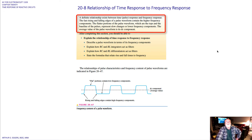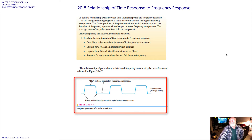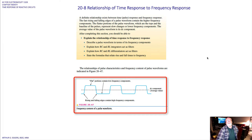The fast rising and falling edges of a pulse waveform contain the higher frequency components. The flatter components of the pulse waveform — the tops and the baseline of the pulses — represent slow changes or lower frequency components. The average value of the pulse waveform is its DC component. Something you might be exposed to later in your career is Fourier analysis, which looks at a waveform and determines what the high and low frequency components are that make up the waveform.